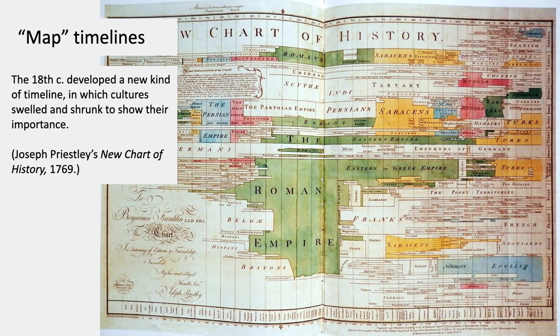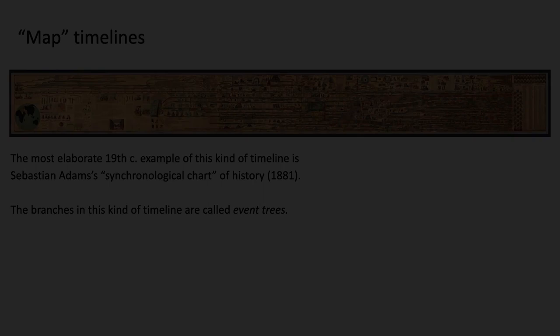A little bit about pre-modern timelines — that is, timelines before modernism. There's a kind of timeline I would call a map timeline, developed in the 18th century. The idea is that time still runs left to right, but when cultures expanded and got more territory, they would take up more vertical space — so when the Roman Empire expanded it took up more vertical space. They become combinations of maps and timelines. That's a famous early one by Joseph Priestley, 1769.